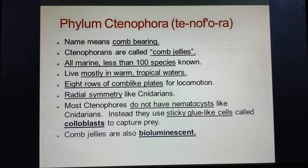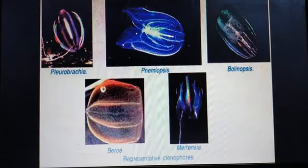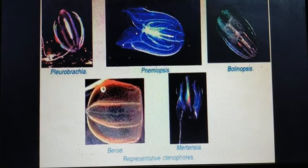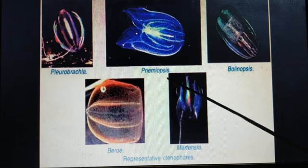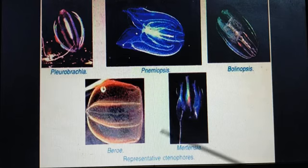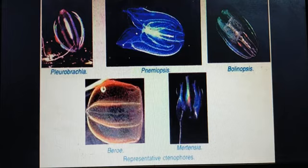These are all the characteristic features of Phylum Ctenophora. Examples include Pleurobrachia, Mnemiopsis, Beroe, and Bolinopsis.